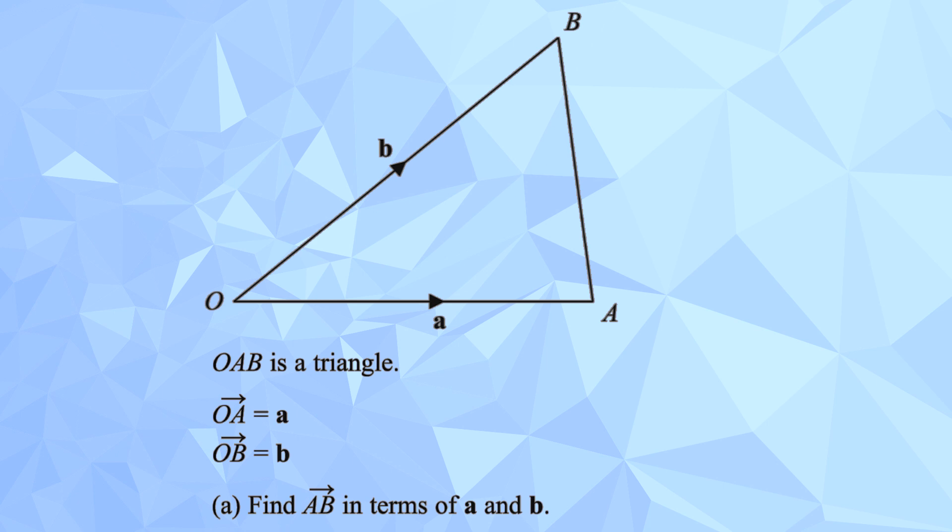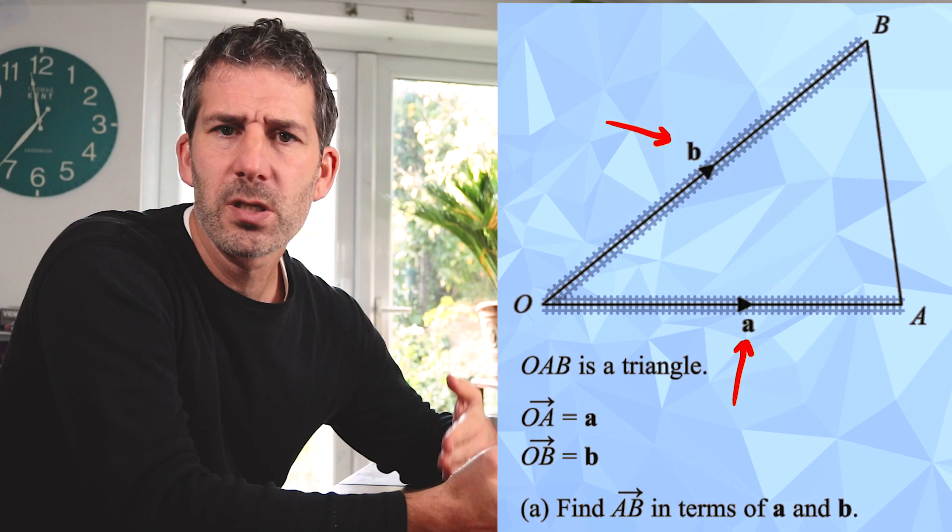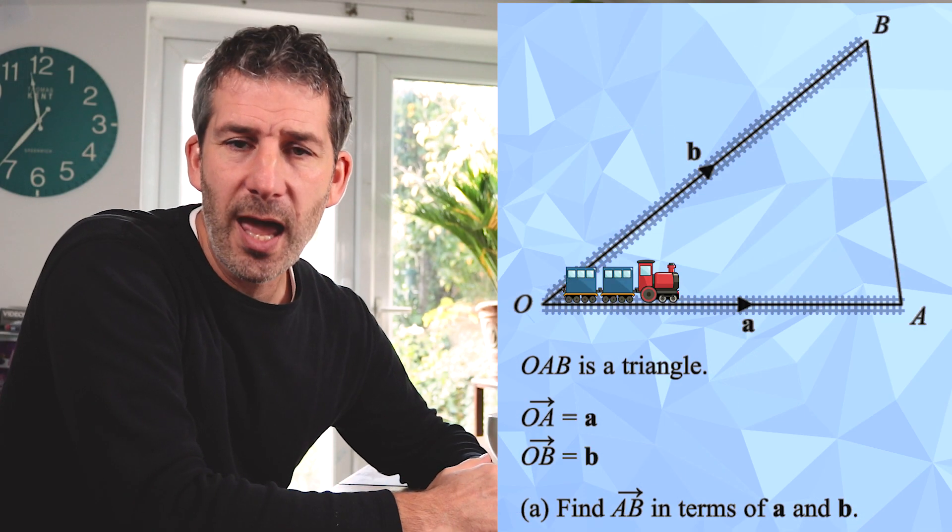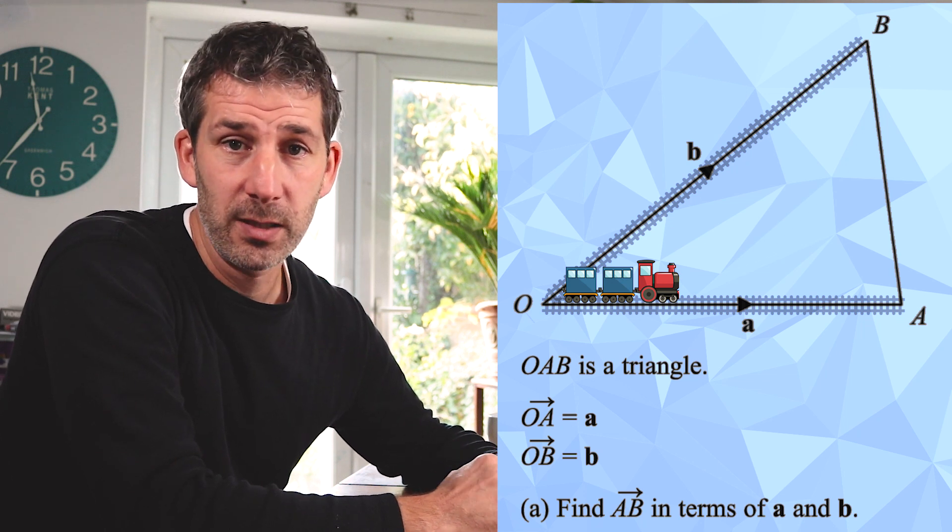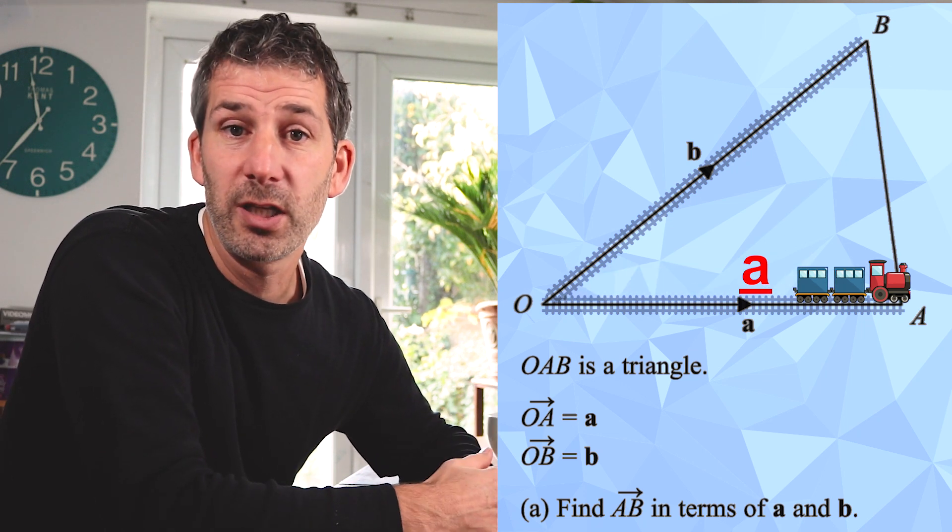I think of A, B and O as three villages and there's currently a railway that connects O to B and O to A. The fact they have the little letters a and b next to them, that tells us that there's a railway line there. So the journey that the train makes from O to A, we call that vector a, and a vector is really just a journey.